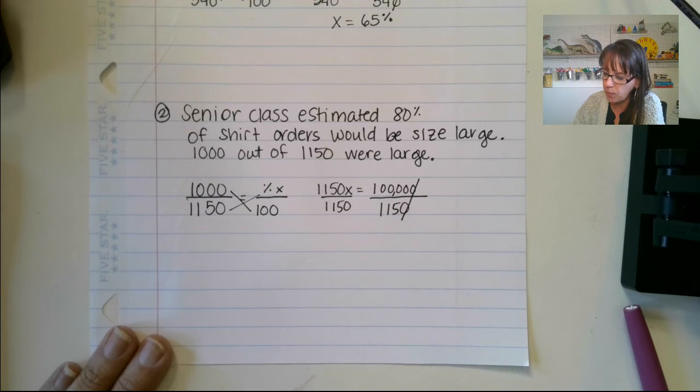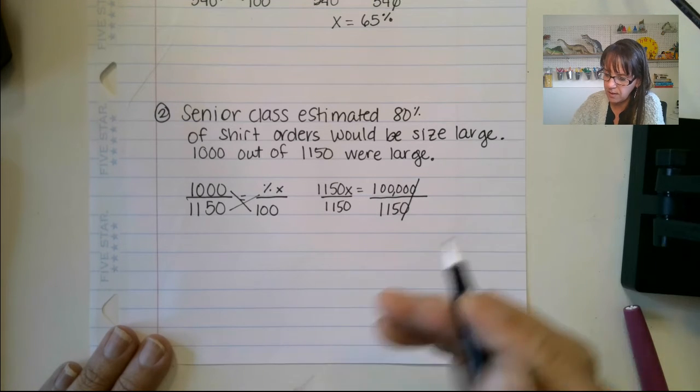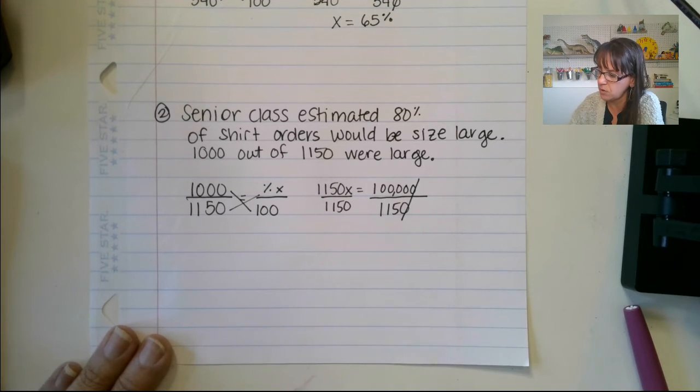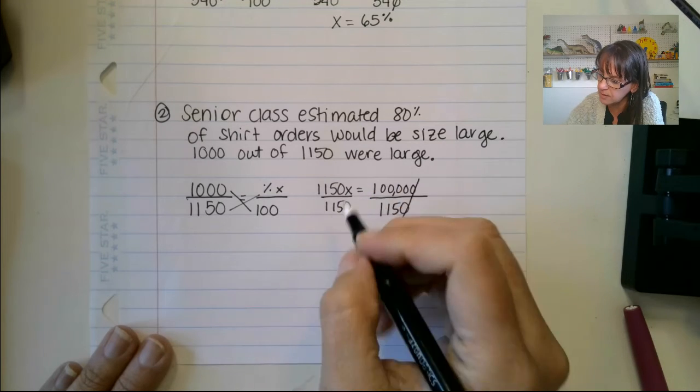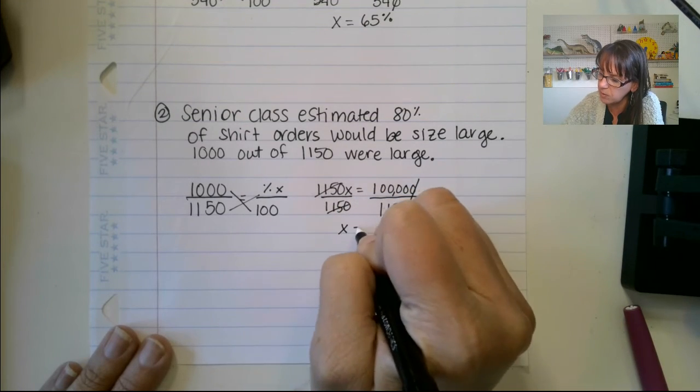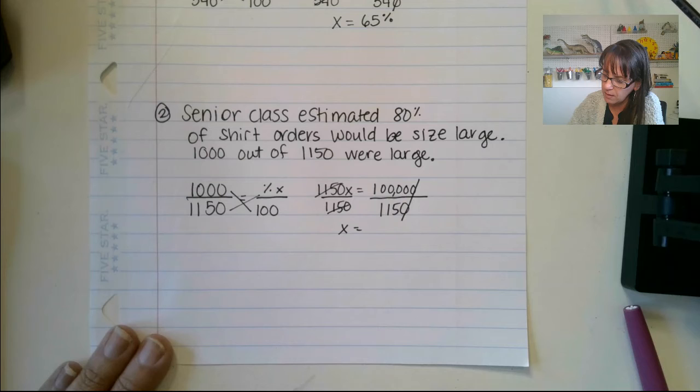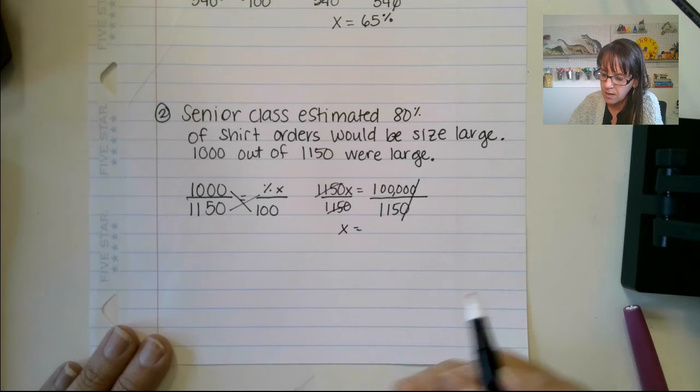And so we end up with, divide it by 1,150. So that, whoa, let's try that again. X, oh, cross these out. X equals. So we've got 1 divided by 1,150. All right.